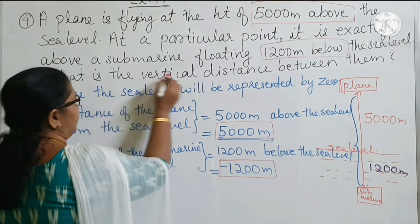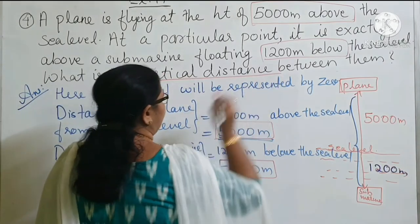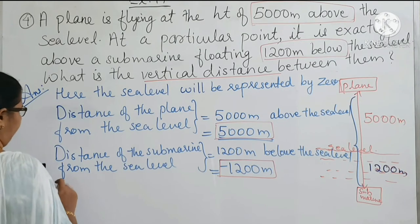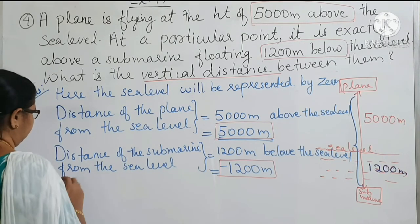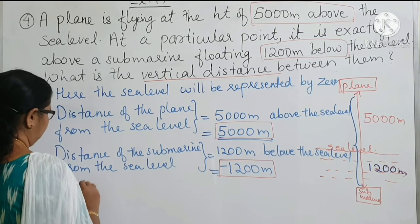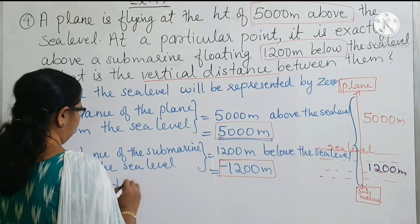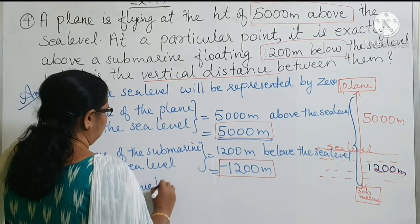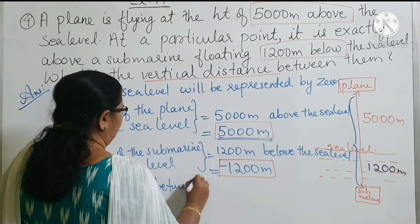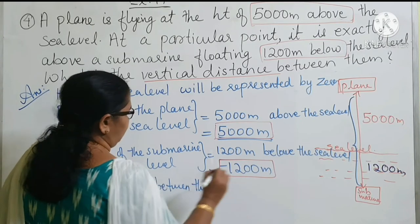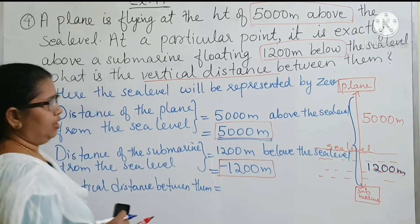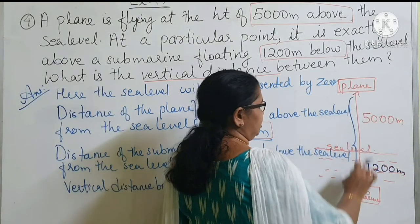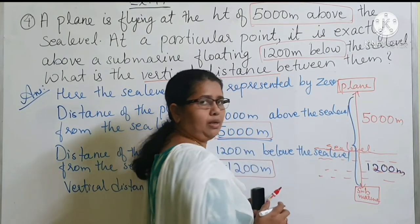Next step: what is the vertical distance between them? To find the distance between two points, we have to subtract.